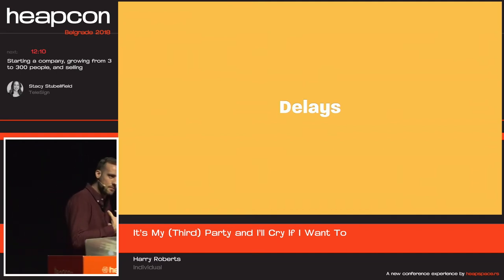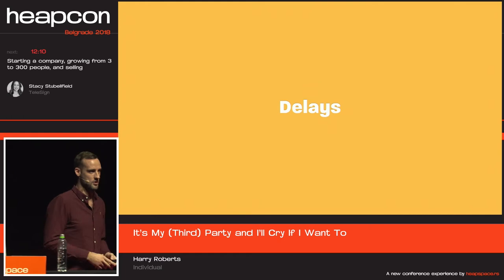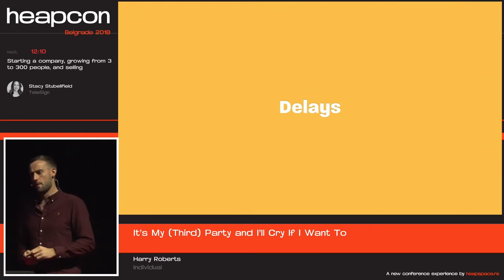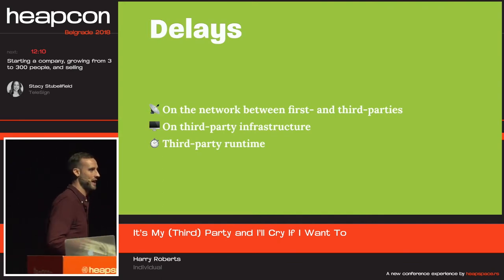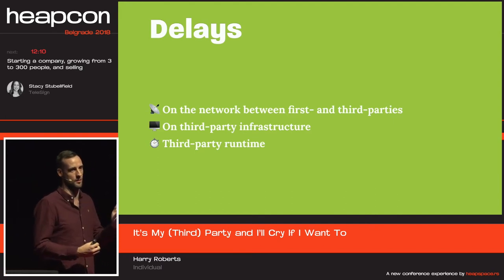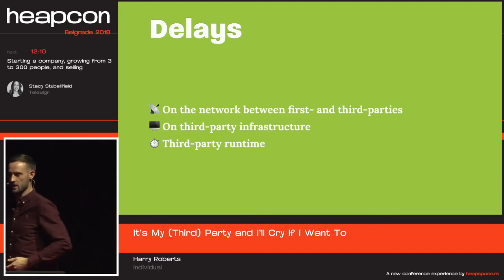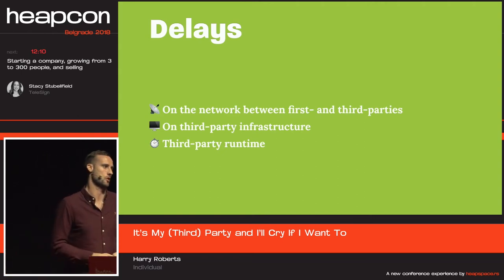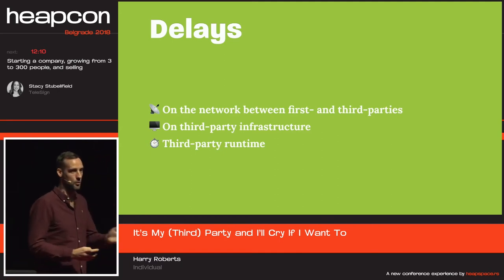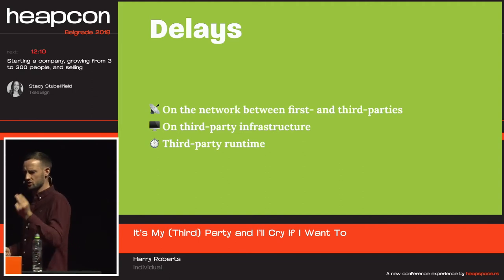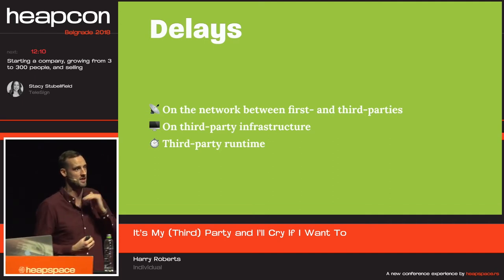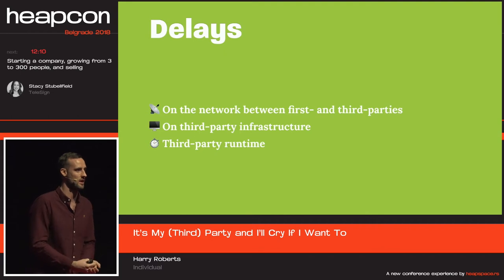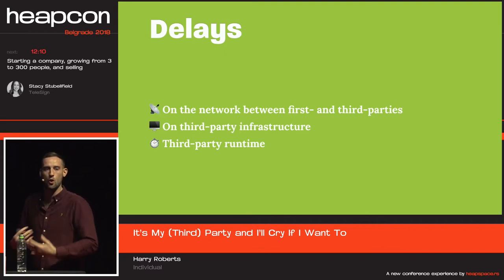The next problem is delays. You don't need me to tell a room full of engineers that time is money and delays are bad for business. Delays could take a number of different forms — network delays between first and third parties, slow downlinks, high latency meaning expensive DNS, TCP, and TLS negotiation. What if third-party infrastructure is suffering? What if your CDN is getting DDoSed? What if your font provider has an outage? Then there's the more subtle cost people don't really consider: runtime performance. What if the JavaScript a third party has sent you is layout thrashing, causing jank, or is expensive unoptimized code?